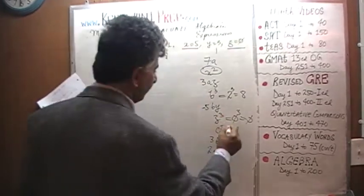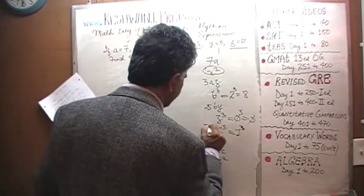C cubed, how much is C? C is 1, so that's very easy. That's just 1 cubed, 1 cubed is just 1.